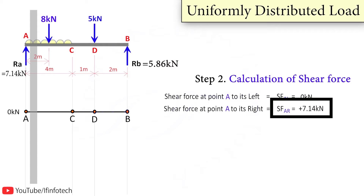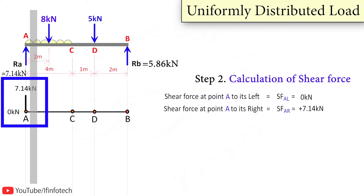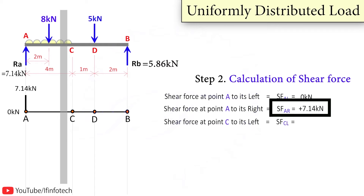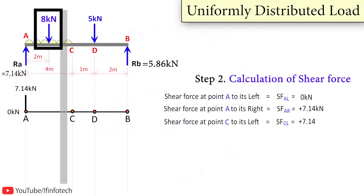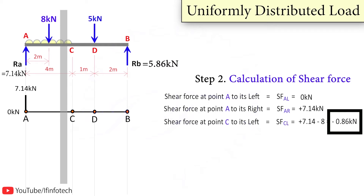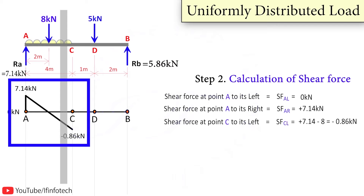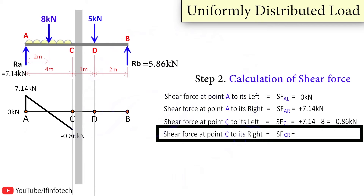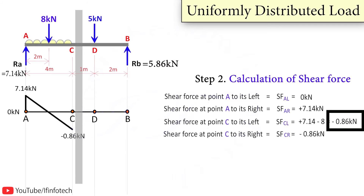Sf at A to the right equals plus 7.14 kN, so I make a vertical line of 7.14 kN. Taking section to the left of point C, I carry forward the previous shear force value of 7.14 kN. To the left of point C there is an 8 kN downward force which is negative, so it becomes plus 7.14 minus 8, giving a shear force value of minus 0.86 kN. Since this is a uniform distributed load over 4 meters, I make an inclined line down to minus 0.86 kN below the reference line. Taking section to the right of point C, I carry forward minus 0.86 kN.